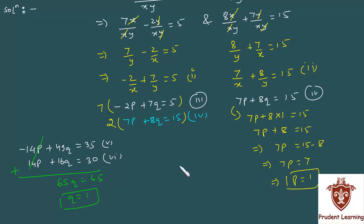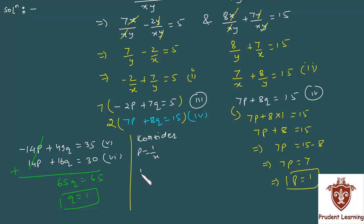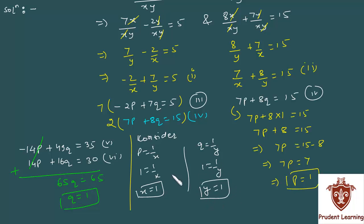So we get p equal to 1 and q equal to 1. But we assumed p as 1 by x, and since p is 1, therefore x is equal to 1. Likewise, we assumed q as 1 by y, and since q is 1, y is equal to 1. So the solution is x equal to 1 and y equal to 1.